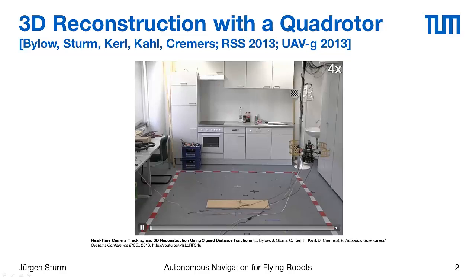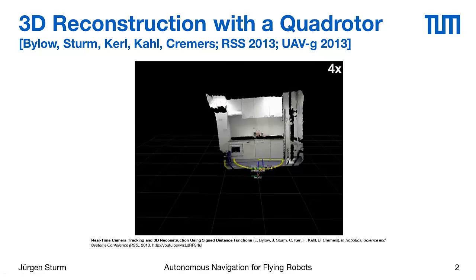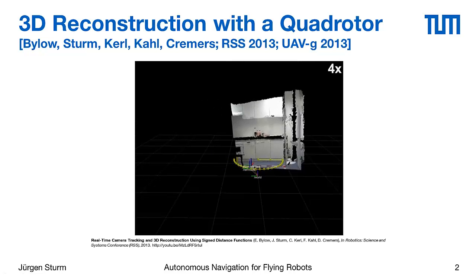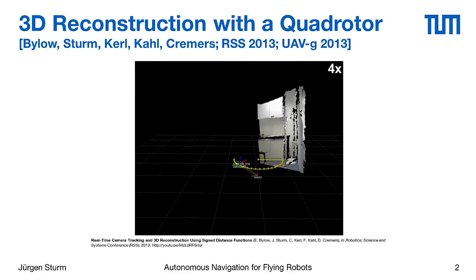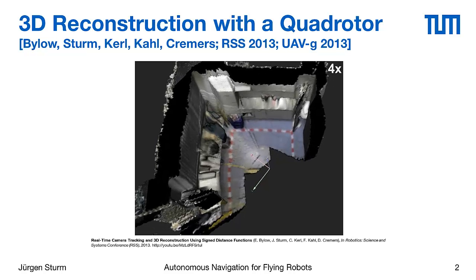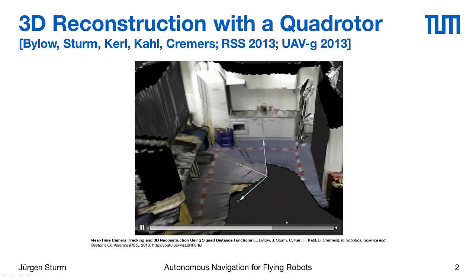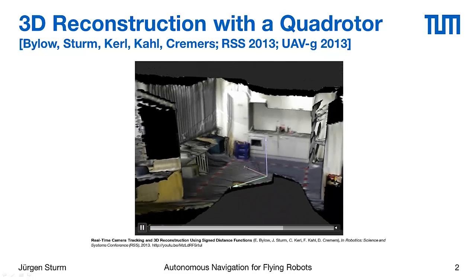Before we start with the technical details, let me first show you this video. This is an Aztec quadrotor called Pelikan and it has a 3D depth camera on board. It now uses the images of this 3D depth camera to generate a 3D model of its surroundings, and at the same time estimates its 3D pose in real time and uses that for position control.